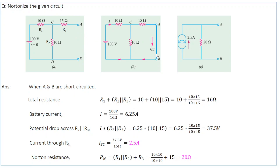First step: short circuit the output terminals A and B, and calculate the short circuit current — the current flowing from A to B. Starting from the positive terminal, current flows through the 10 Ω (R1), reaches point C, and has two options: flow through the 15 Ω (R3) or flow through the 10 Ω (R2). The current flowing through R3 is the one that flows from A to B, so Isc is the current through the 15 Ω resistance.